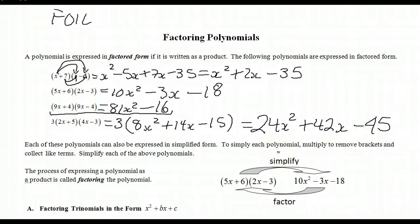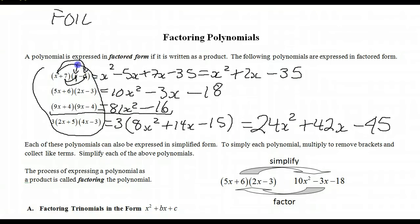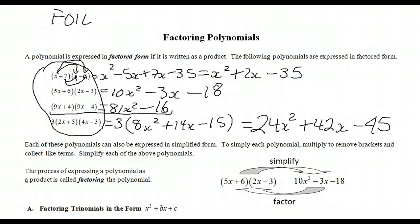To simplify, we multiply to remove the brackets and collect like terms, so each of the above are simplified. The process of expressing a polynomial as a product is called factoring the polynomial — that would be taking each of these simplified forms and coming back to the factored forms. I have some supplemental videos from the math 10c course on factoring, marked as SUPP, if you need a review.